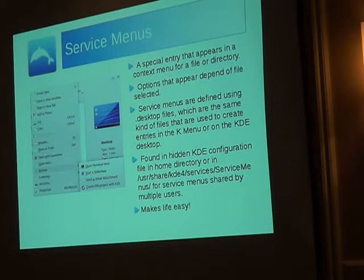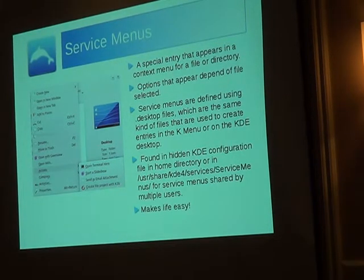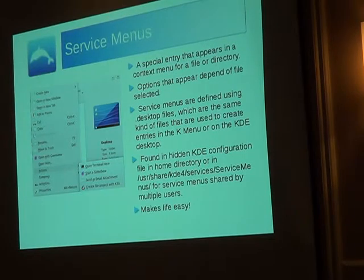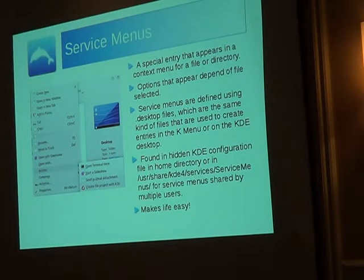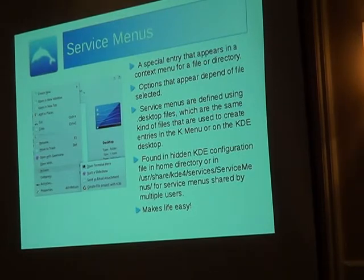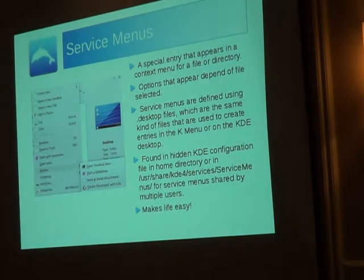When you first access Dolphin after installing KDE or a distro with KDE as the default desktop, you're going to see a small group in the context menu. What appears there depends on the kind of file you've got selected because there are file associations. KDE knows that if you're opening a PDF and you've got the full PDF service menu installed, you can simply click one of those and concatenate two PDFs together — just highlight two PDFs, click merge, and it merges into one document in a couple of seconds.